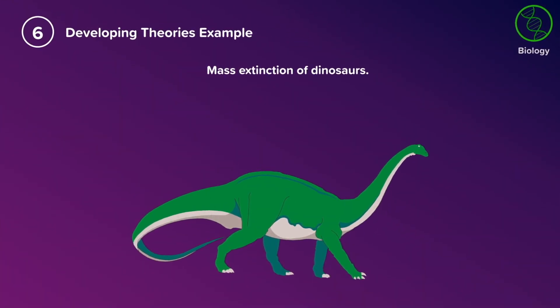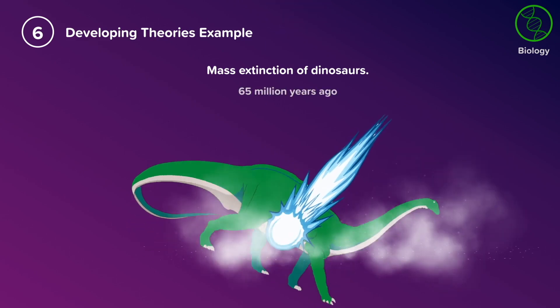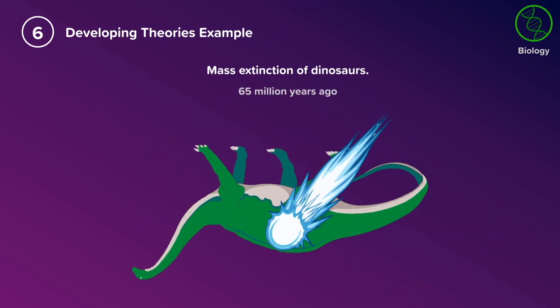Here's an example in biology of how theories have developed and continue to develop. In 2010, an international team of scientists published a data review of lots of evidence put together over 20 years and agreed that the extinction of the dinosaurs was caused by an asteroid colliding with Earth in Mexico around 65 million years ago.